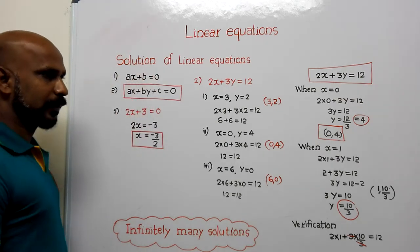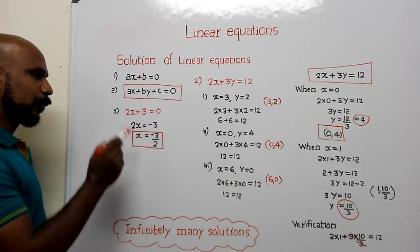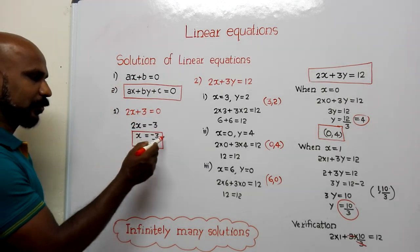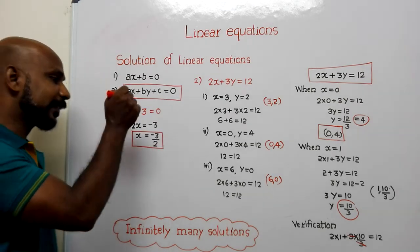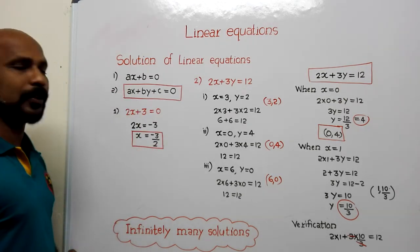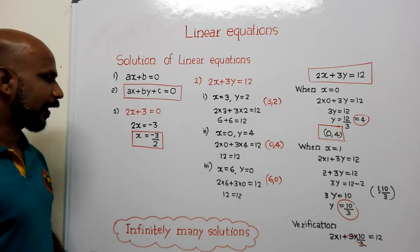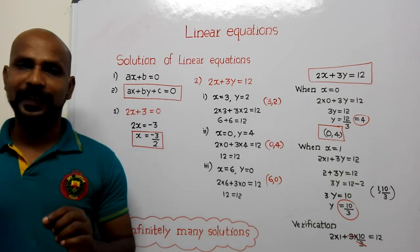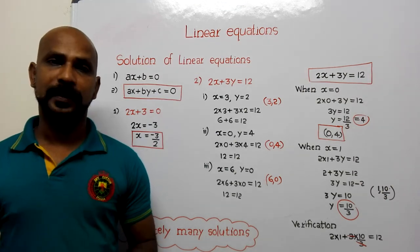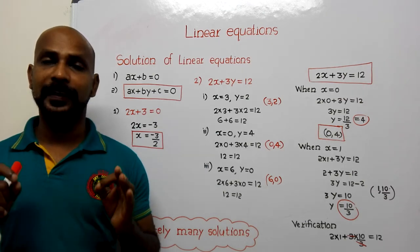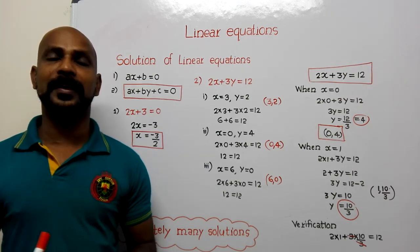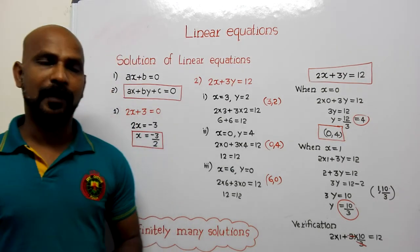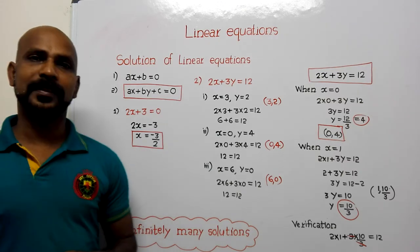First, consider ax plus b equal to zero. I have written an example: 2x plus 3 equal to zero. So 2x equal to minus 3, therefore x equal to minus 3 by 2. We got the solution of this linear equation in one variable as x equal to minus 3 by 2. An important conclusion: every linear equation in one variable has a unique solution — meaning only one solution.